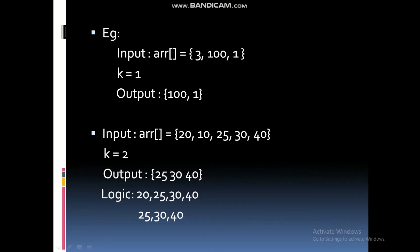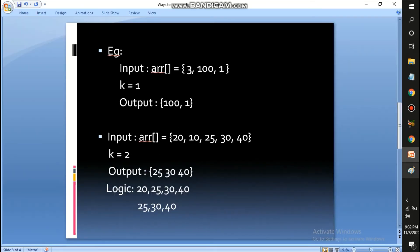Example one: the initial array is [3, 0, 1] and we can delete one element. Traversing the array, the first element 3 is less than 100, so we delete 3 and we're left with [10, 1] — that's the output. Example two: given an array of five elements with k equals 2, meaning we can delete two elements, the output is 25, 30, and 40. I'll explain this with a dry run.